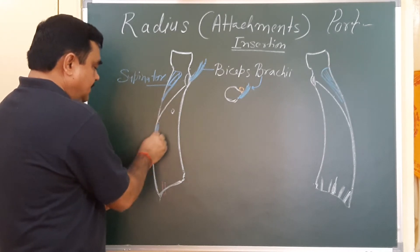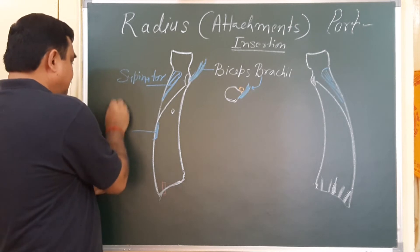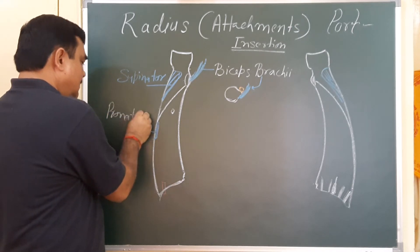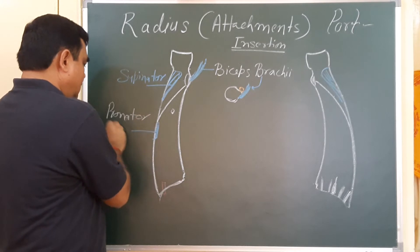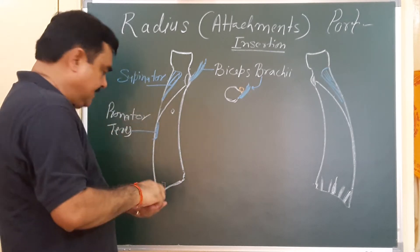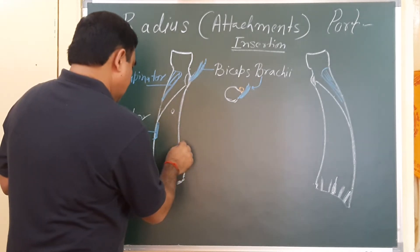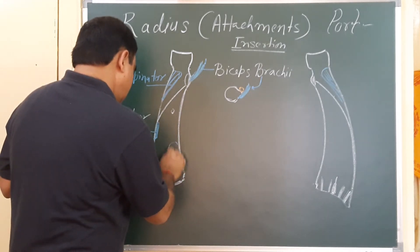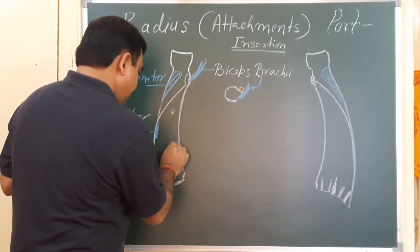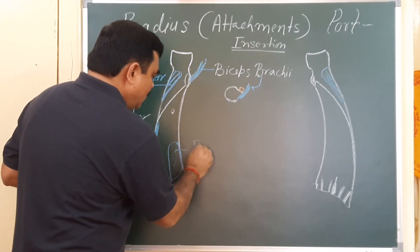Another muscle here is pronator teres. This muscle is pronator teres. And another muscle here is pronator quadratus.